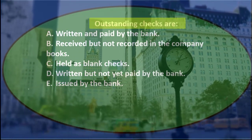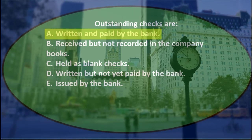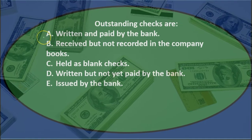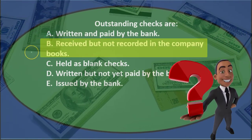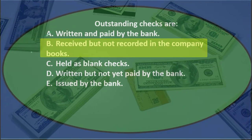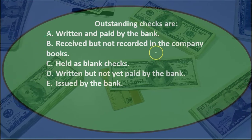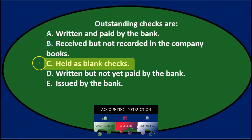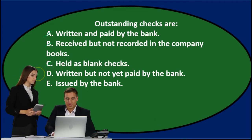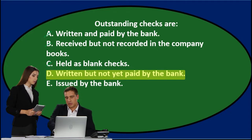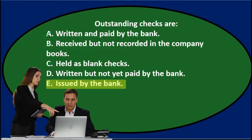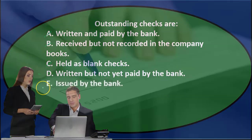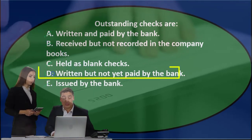Outstanding checks — A says written and paid by the bank: if they were both written and paid they wouldn't be outstanding, they would be cleared, so that's not it. B says received but not recorded in the company books: that seems backwards, because it would be recorded in the books but not yet cleared by the bank. C says held as blank checks: that's not going to be an outstanding check. D says written but not yet paid by the bank: that sounds pretty reasonable. E says issued by the bank: that would be some type of bank check, so that's not it. D looks like the best definition.